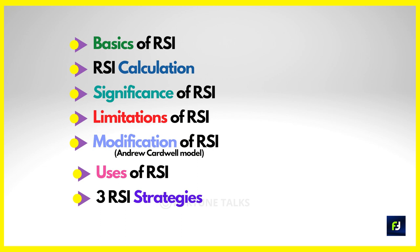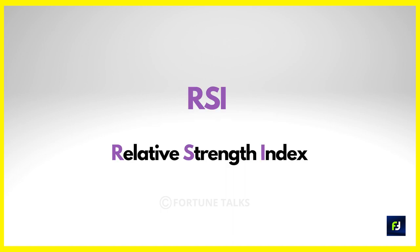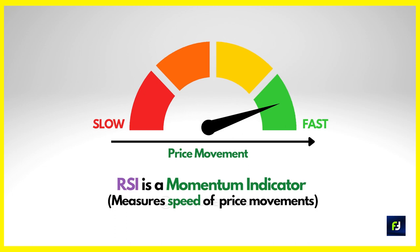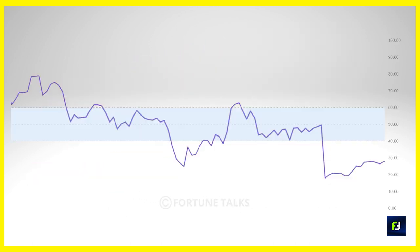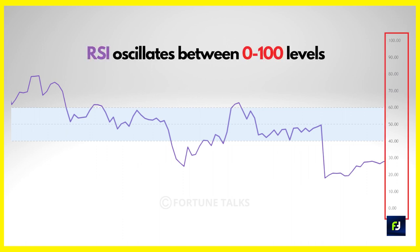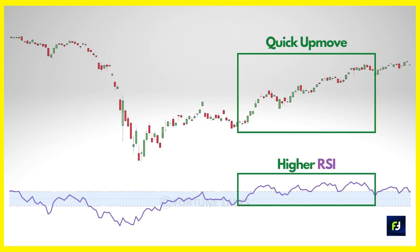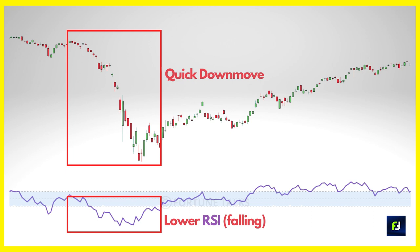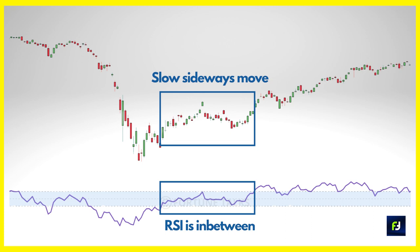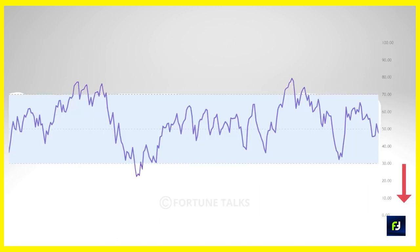RSI stands for Relative Strength Index and it is a momentum indicator developed by J. Welles Wilder. RSI is an oscillating type indicator that moves to and fro between a fixed set of values — the RSI oscillates between 0 and 100. Since RSI is a momentum indicator, it measures how fast the price moves. The quicker the price has increased, the greater the RSI value. The RSI can fluctuate between 20 and 30 and go all the way up to 70, 80, or even 90.